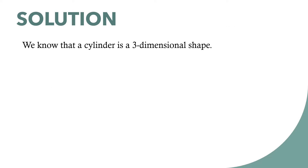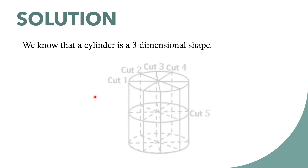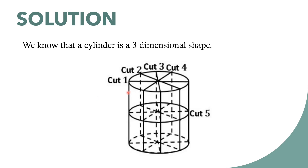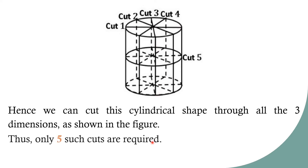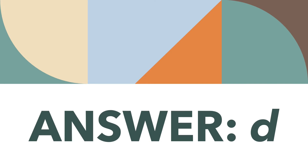Solution: We know that a cylinder is a three-dimensional shape. On cutting the cylinder as shown in the figure, we get 16 equal pieces. We can cut the cylindrical shape through all three dimensions as shown in the figure. Thus, only five such cuts are required. The right answer to the question is option D.